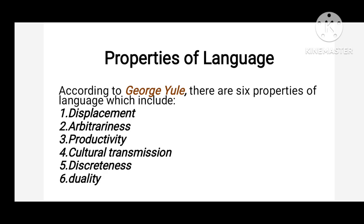Properties of language mean distinct characteristics of a language. There are six properties of language, which were given by a famous linguist George Yule. These properties include displacement, arbitrariness, productivity, cultural transmission, discreteness, and duality. Let's understand all of them one by one.